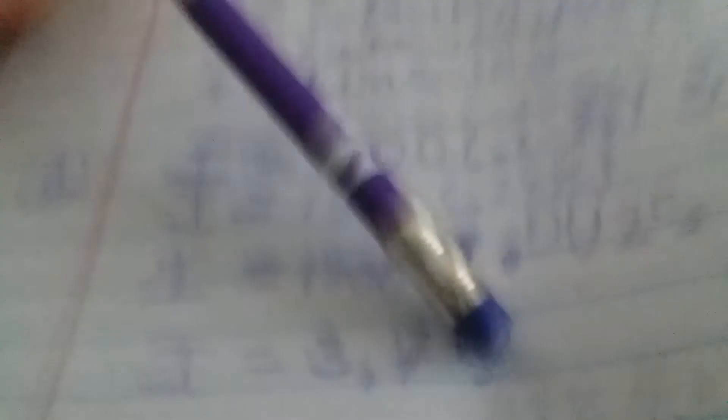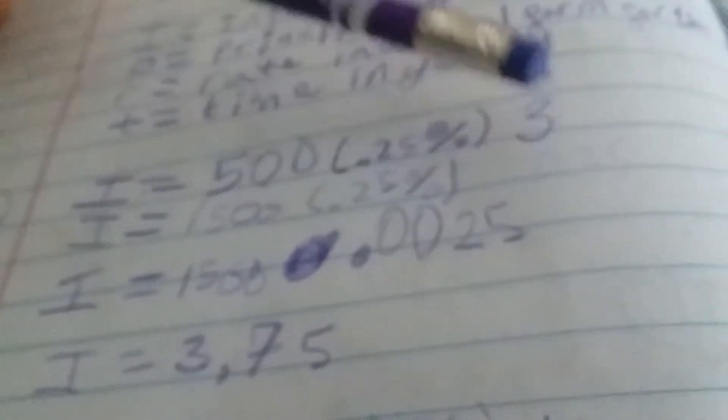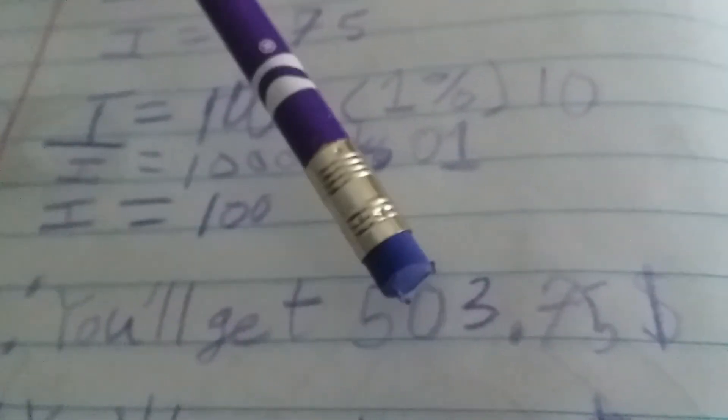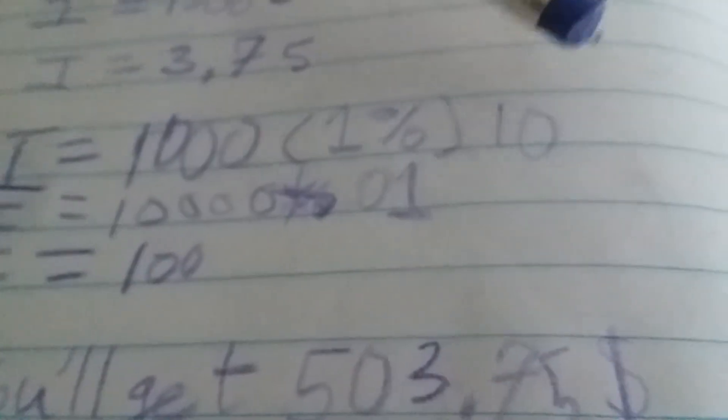So, this is $3.75. You add this to the principal amount, and that's how much money you've got after letting your money sit for this many years. For problem one, you'll get $500, $503.75 in three years.